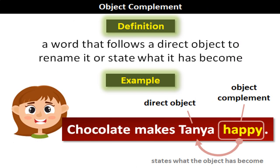Coming to object complement — a word that follows a direct object to rename it or describe its state is an object complement. For example, 'Chocolate makes Tanya happy' — 'chocolate' is the subject, 'makes' is the linking verb, 'Tanya' is the direct object, and 'happy' is completing the sentence and telling something about the direct object Tanya — it tells us the state of Tanya is happy. Hence 'happy' is an object complement. That brings us to the end of the lesson.